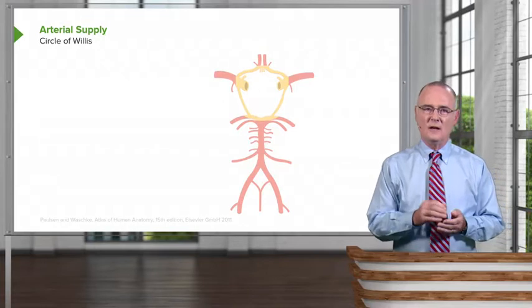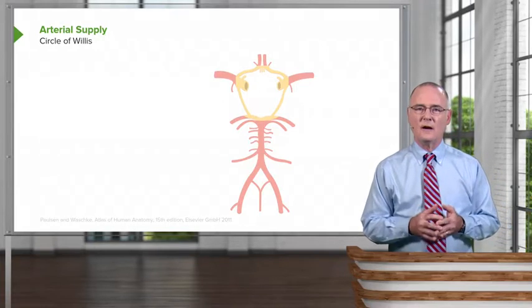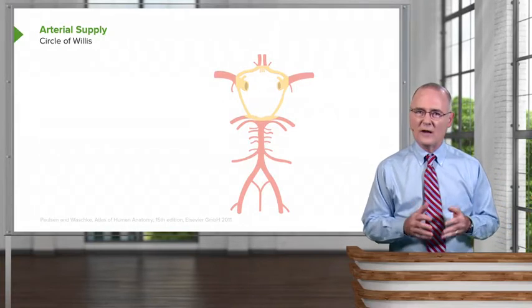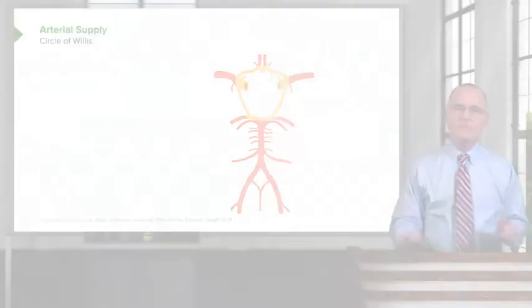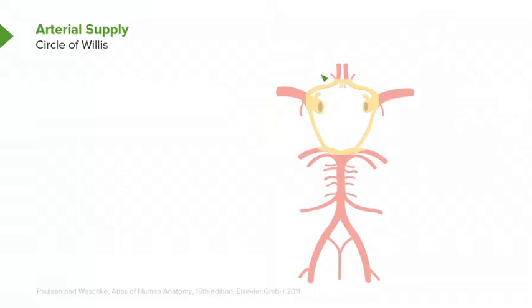The take-home message here is that the internal carotid arteries contribute to what is known as the anterior circulation to the brain through their branching pattern that we see around here, whereas the posterior circulation is supplied by the vertebral arteries.